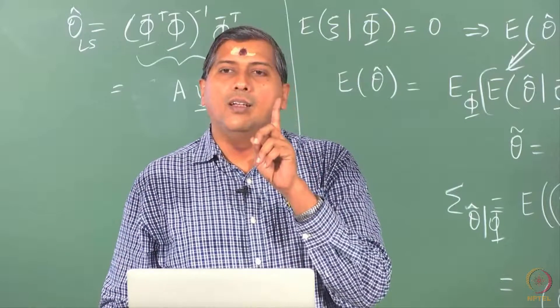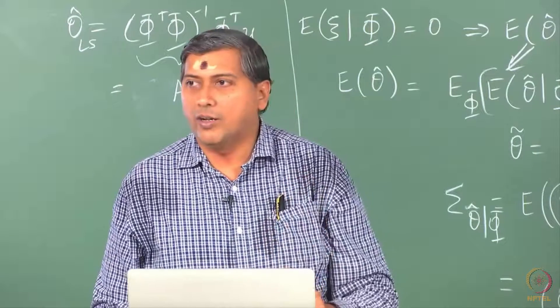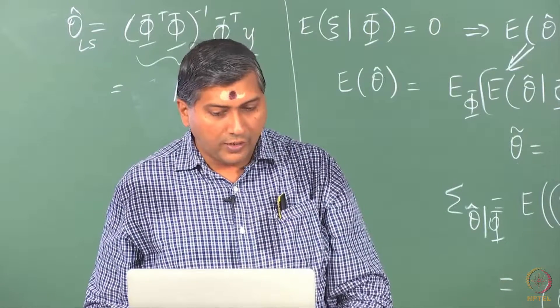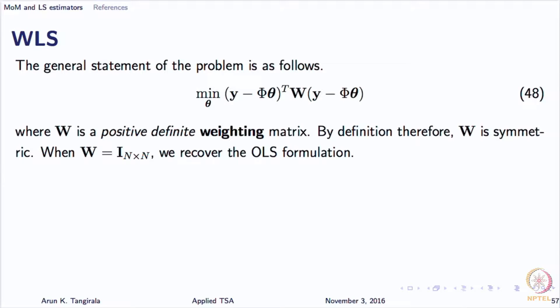There are numerous reasons why we want to look at weighted least squares. Fortunately, the solution can be obtained in one shot using the solution to OLS. This is the formulation of the weighted least squares: instead of minimizing (y − Φθ)ᵀ(y − Φθ), we now have a weighting matrix W sitting in there. If the weighting matrix is identity, you go back to the OLS formulation. If W is diagonal with different weights, you are attaching different levels of importance to different observations.